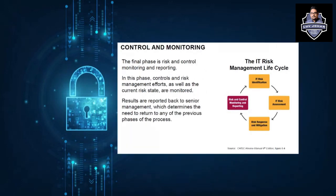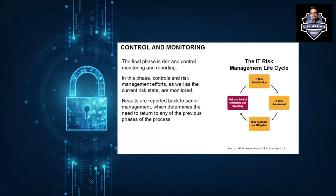The final phase is control and monitoring. Here, you monitor two things: risk and controls. You need to understand the current risk state after implementing controls — specifically, whether the residual risk falls within the organization's risk appetite. If not, you repeat the cycle to understand why and consider implementing compensatory controls to ensure the risk falls within acceptable appetite levels.